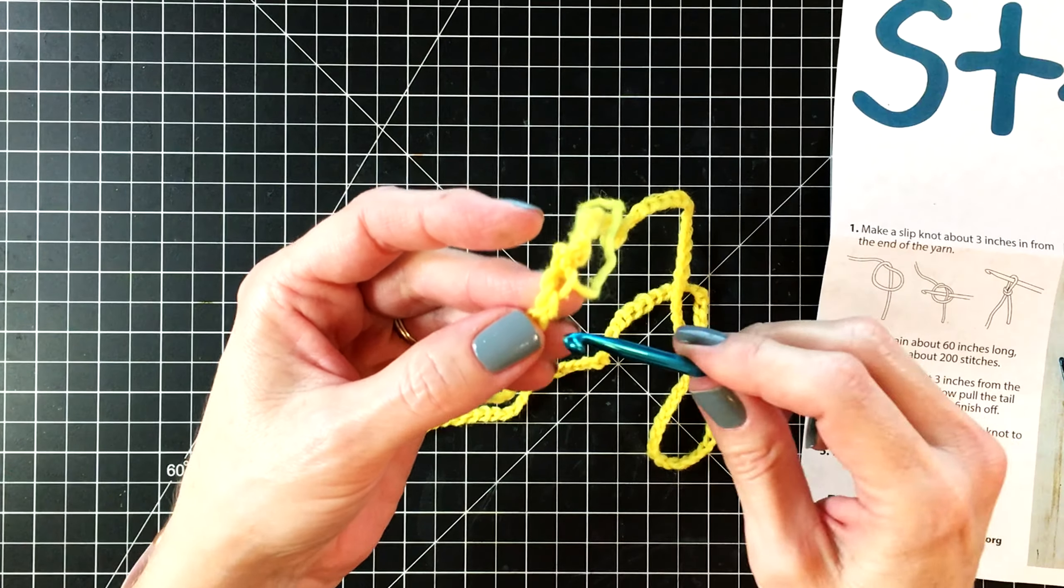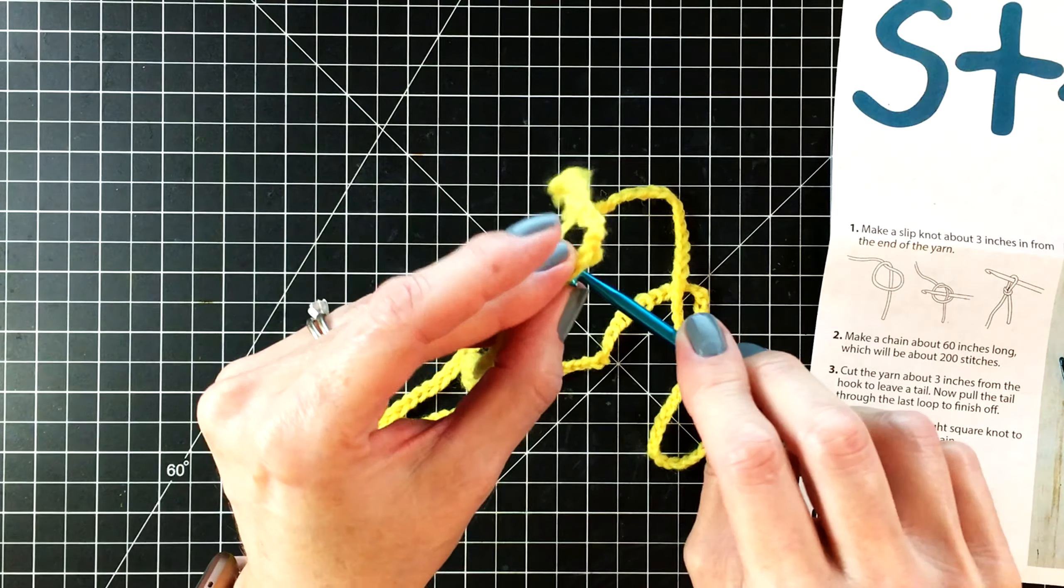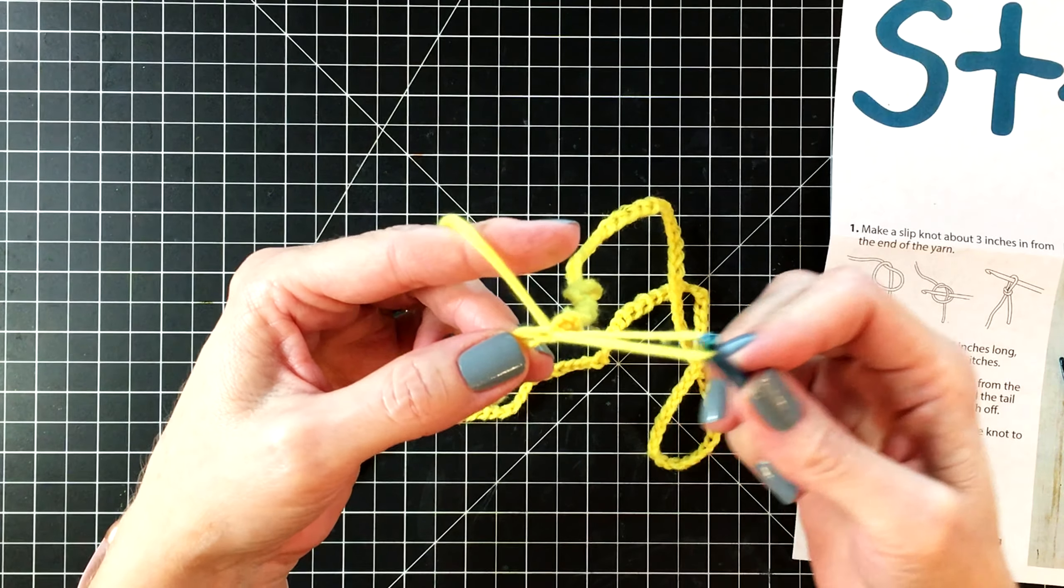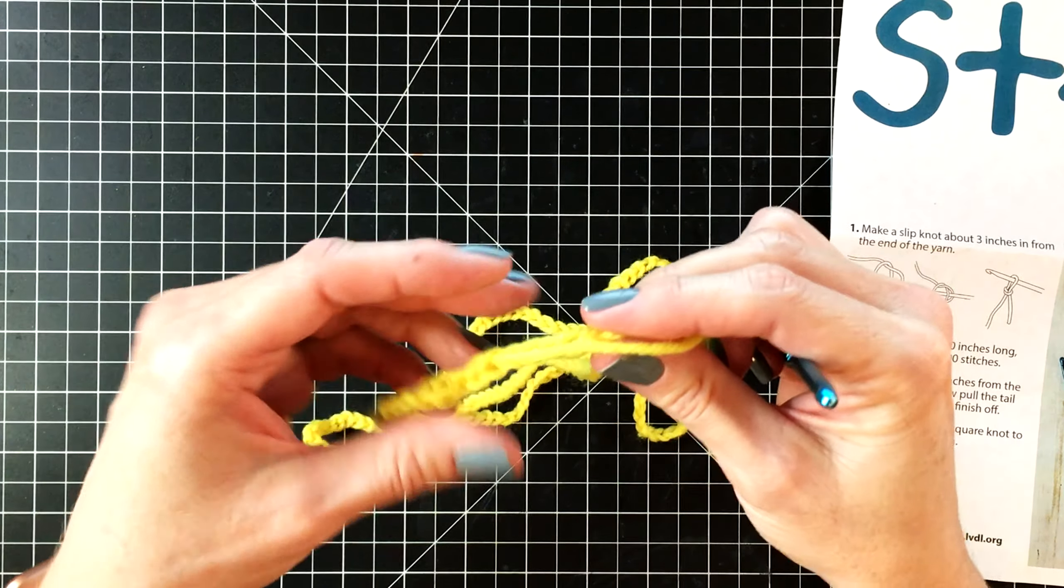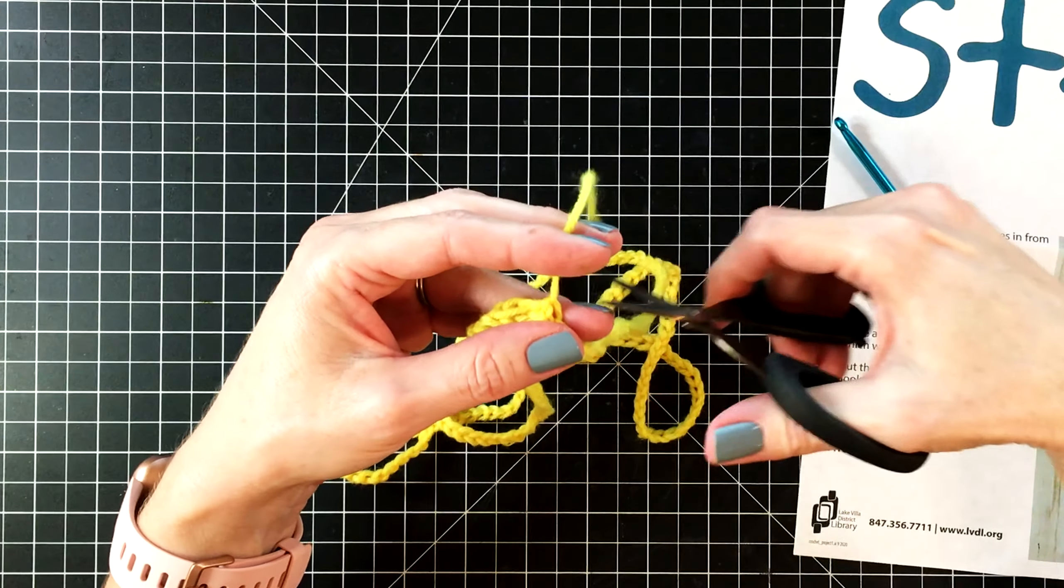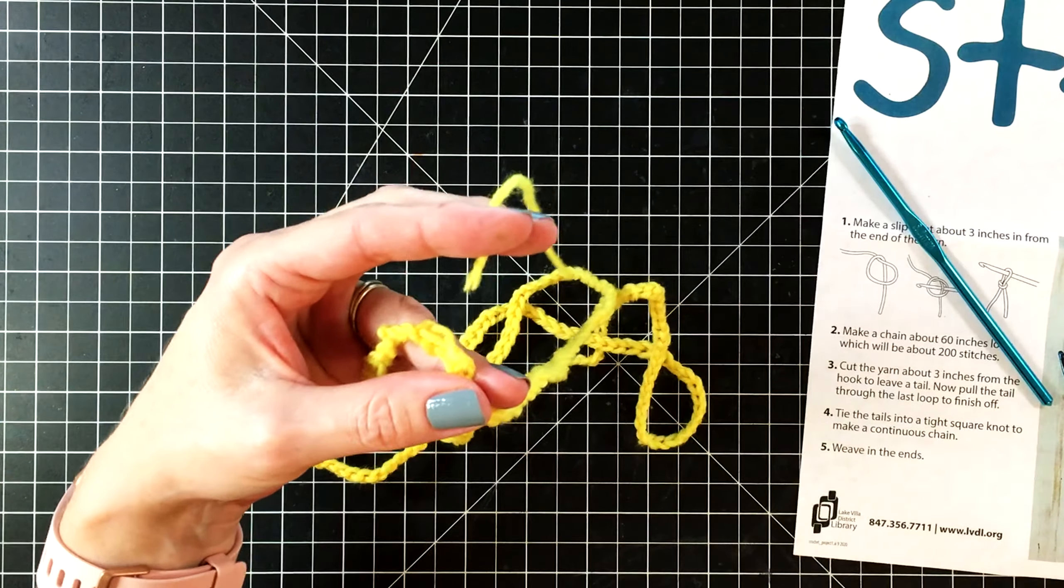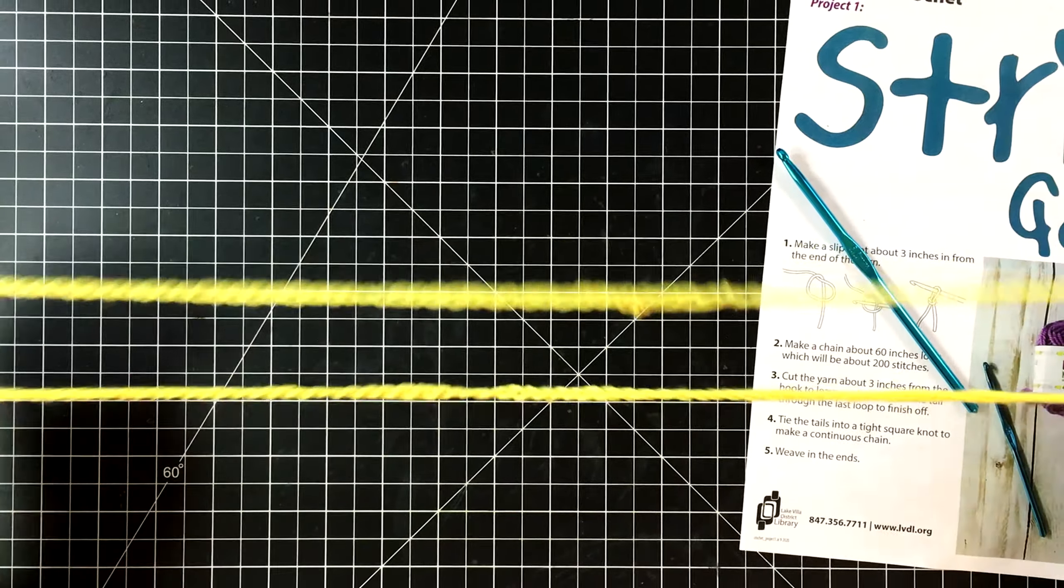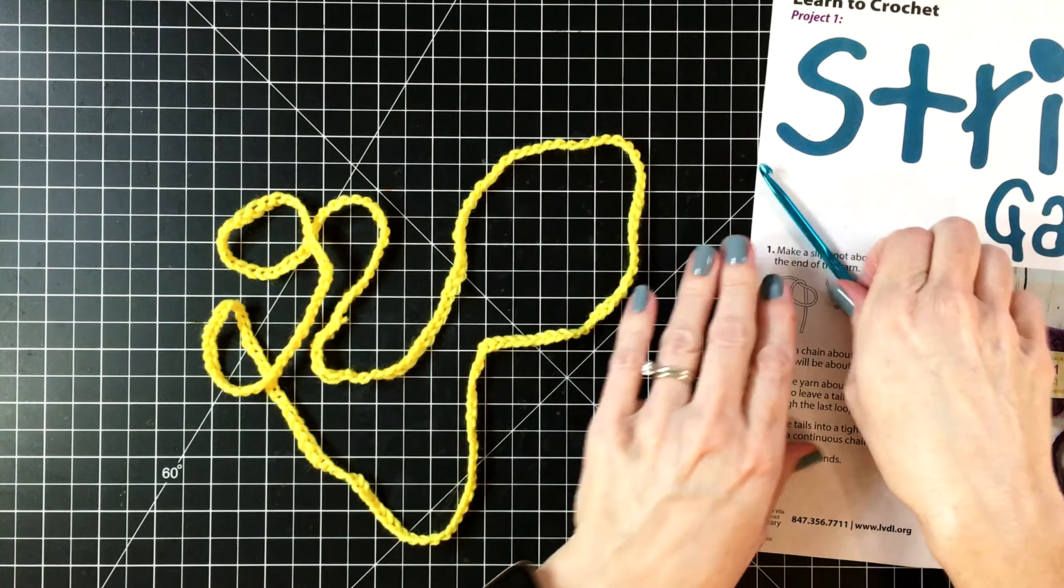And then you're going to do it with the second tail. You don't have to go into each and every chain. Just here and there. Wrap it around your hook and pull it through. Now let's cut the tail off of this side. And again, cut it as close as you can to the project. Give it a little tug to pull the end in. And we are ready to play with our string game.